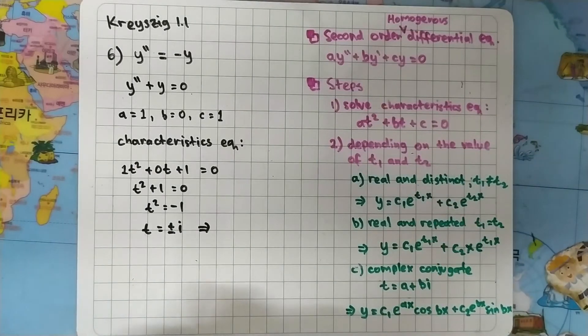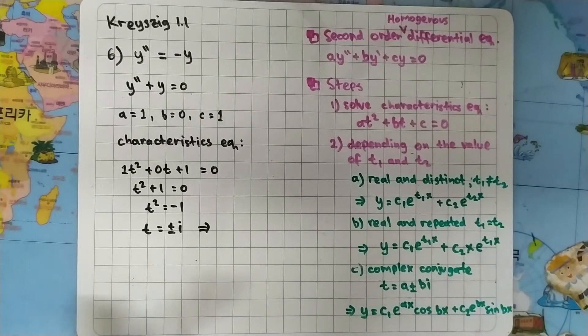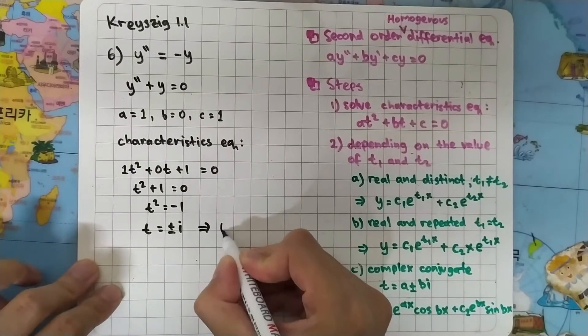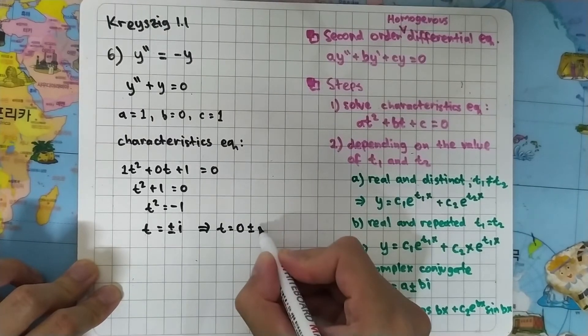T is actually equal to zero plus minus i.